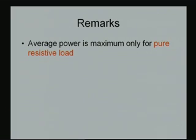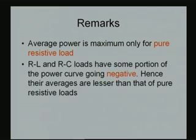Some remarks from these graphs: the average power is maximum only for a pure resistive load. R-L and R-C loads have some portions of the power curve going negative, and therefore that portion of the area subtracts from the positive portion when finding the average. Therefore the average power for R-L and R-C loads is going to be less than for the pure resistive case.